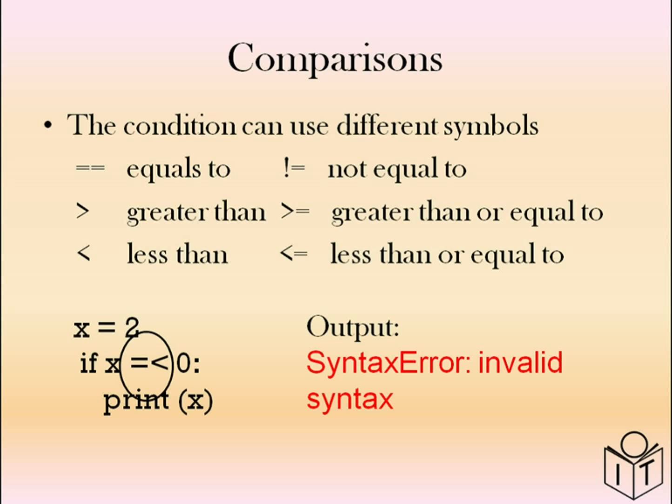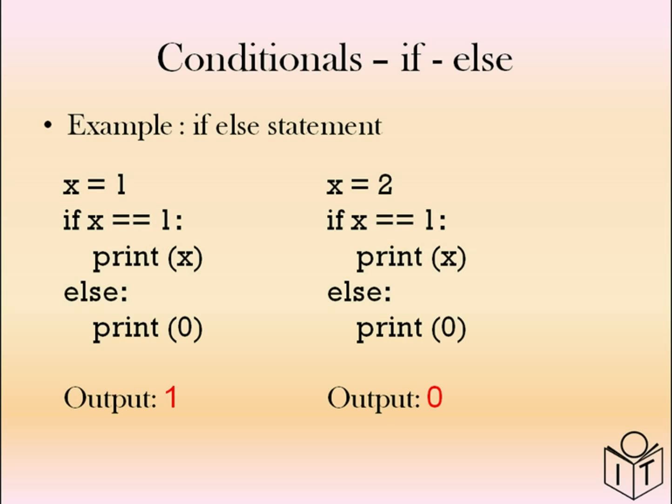The if statement actions code if the condition is true. What happens if it's false? You can action that code if you use an else statement. For example, x equals 1 — the condition, does x equal 1? Yes, that will print x. But if x did not equal 1, then it would print zero. In the second example, we have a false situation, so the if statement is not true, so the else part which prints zero will happen.